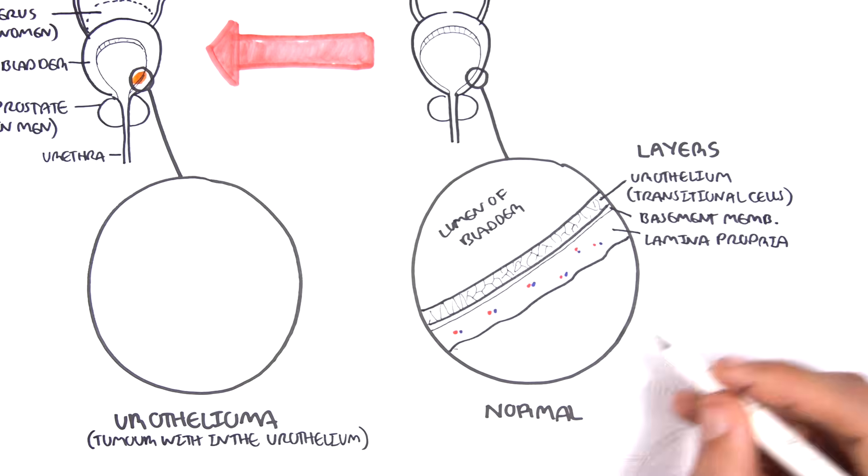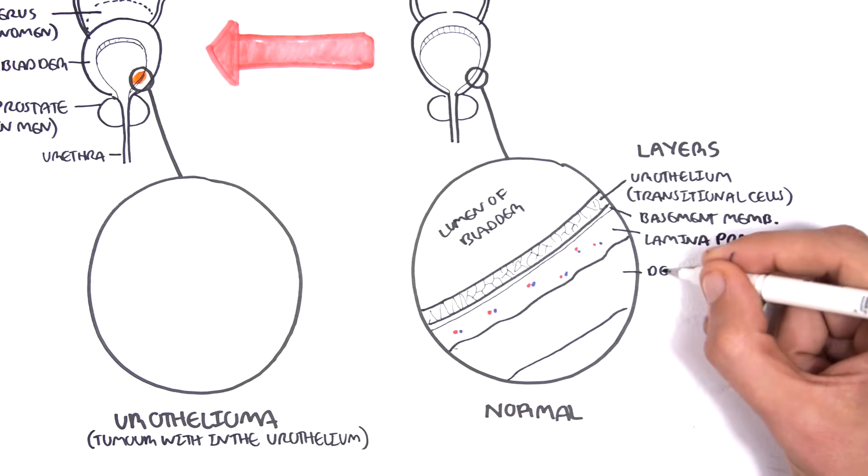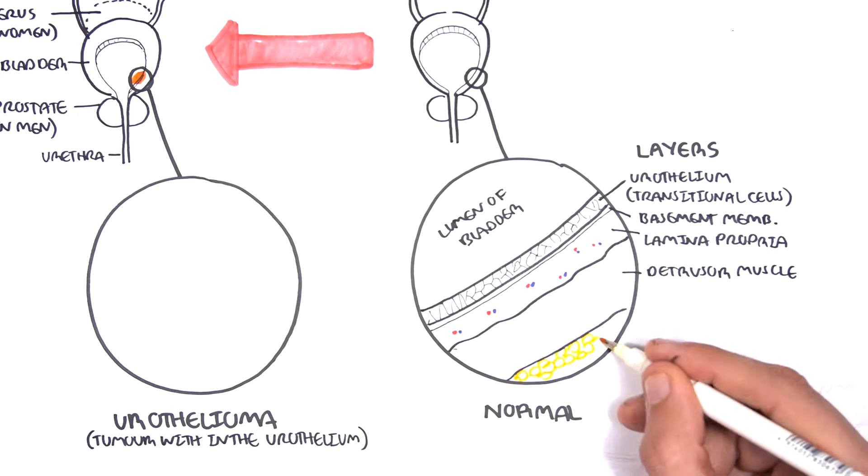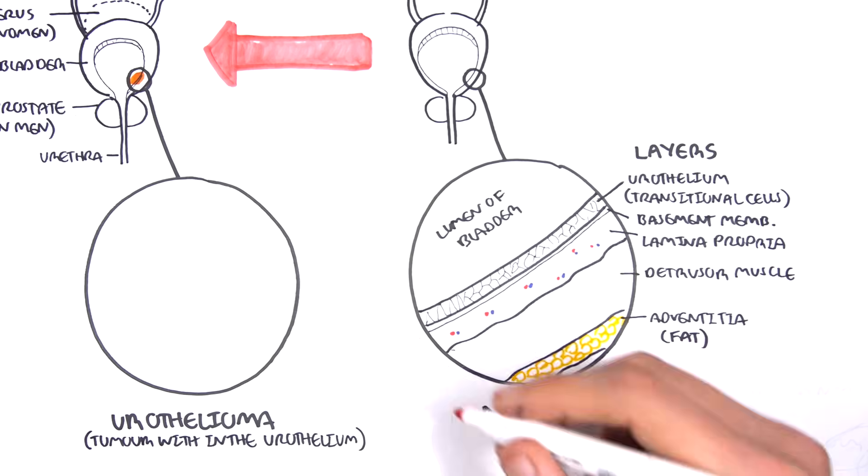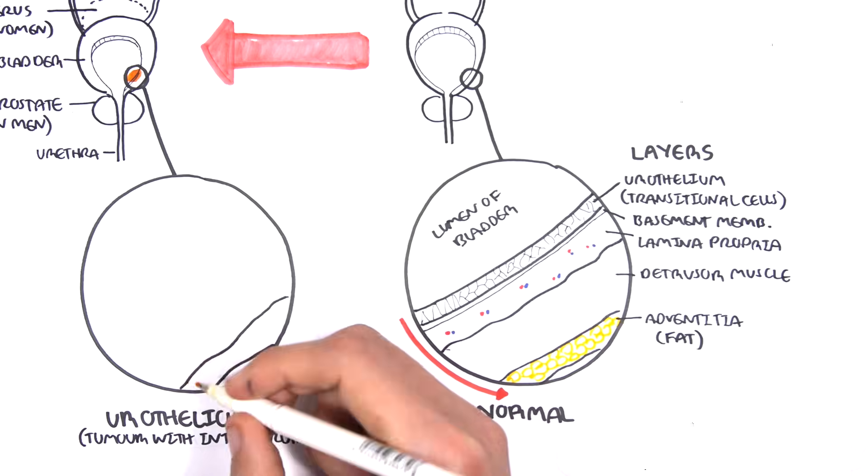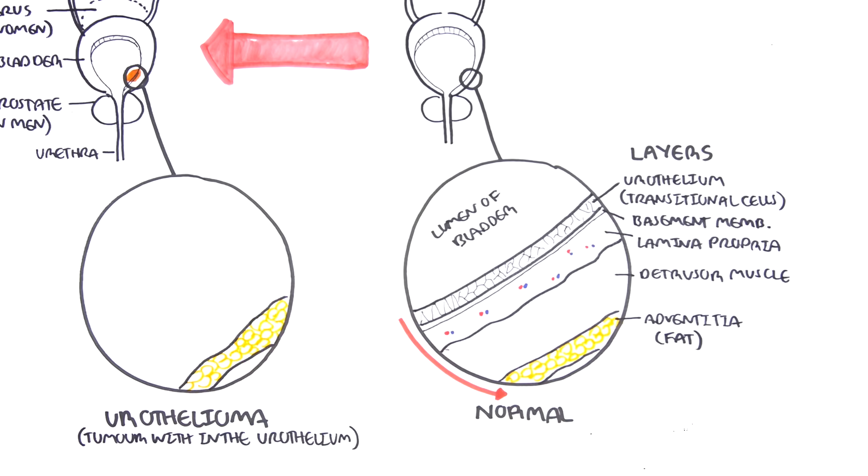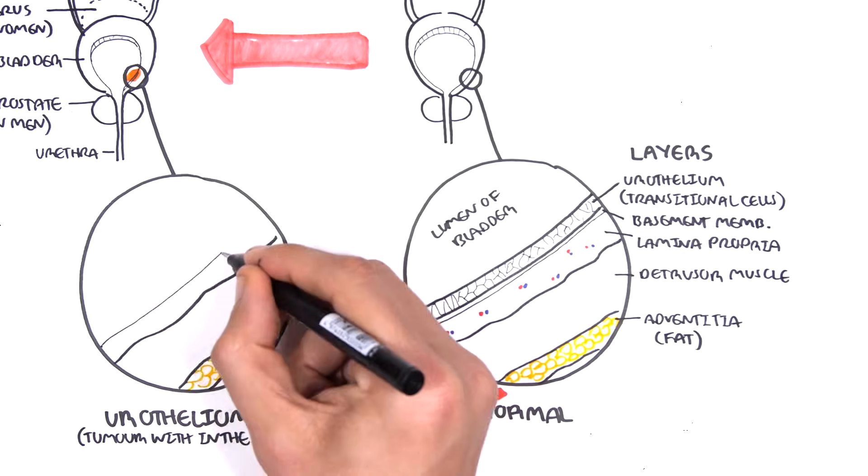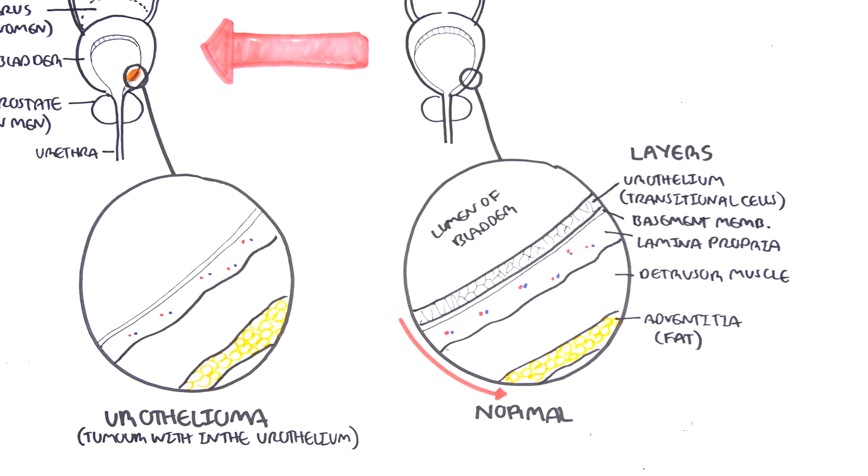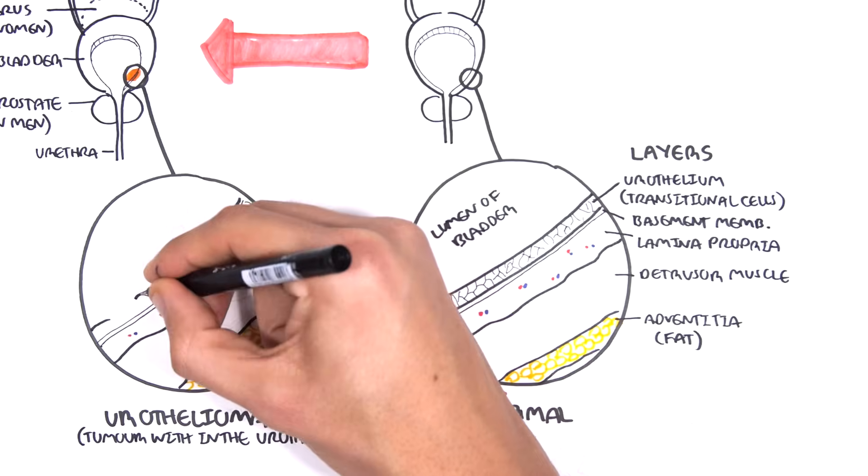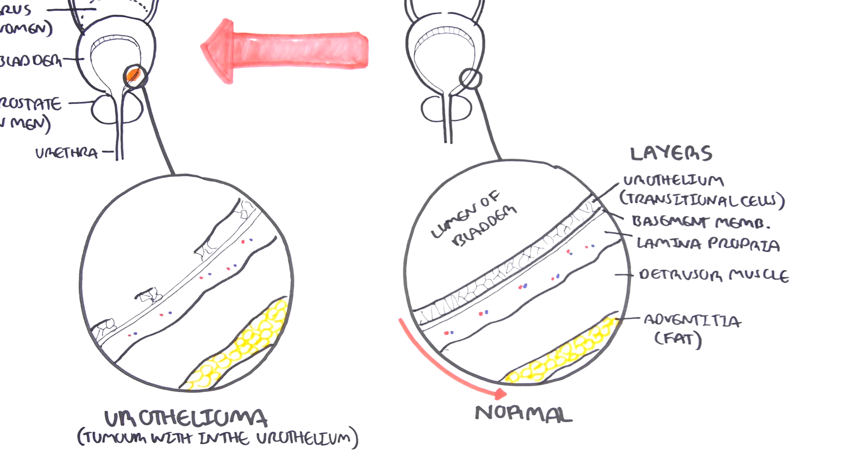The lamina propria consists of many blood vessels. Below the lamina propria is the detrusor muscle, and then we have the adventitia, which is primarily fat. The cells within the urothelial layer, which are made up of transitional cells, can evolve and mutate due to several factors, and this will lead to abnormal cells and then progress to urothelioma or transitional cell cancer.